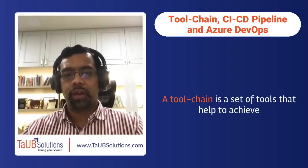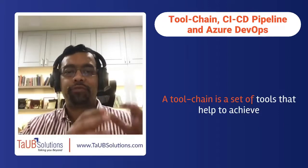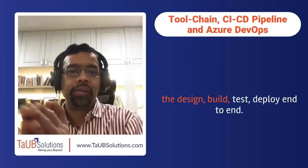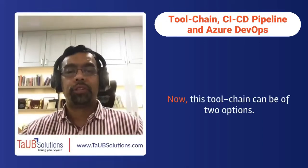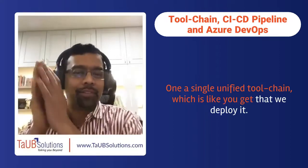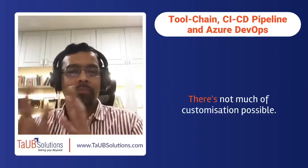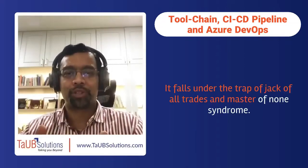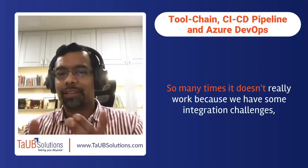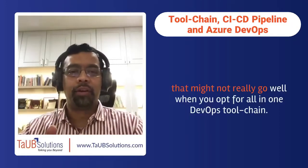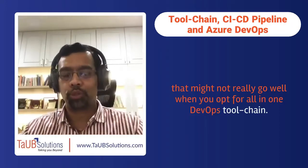A tool chain is a set of tools that help achieve the design, build, test, deploy end-to-end. This tool chain can be of two options. One is a single unified tool chain — you get it and deploy it, but there's not much customization possible. It falls under the trap of the jack-of-all-trades and master-of-none syndrome. Many times it doesn't really work because of integration challenges that might not go well when you opt for an all-in-one DevOps tool chain.